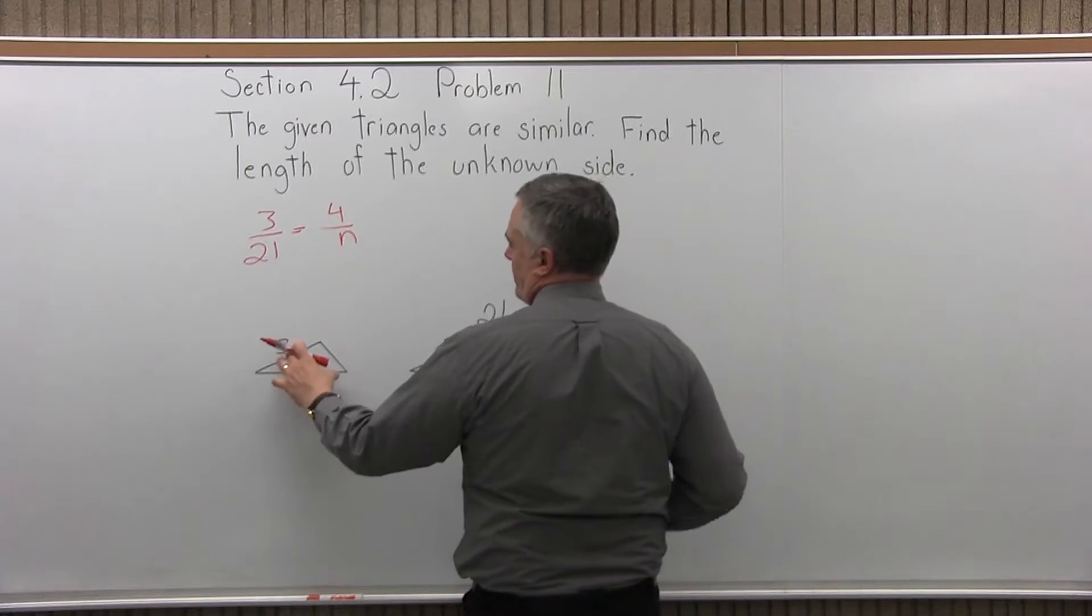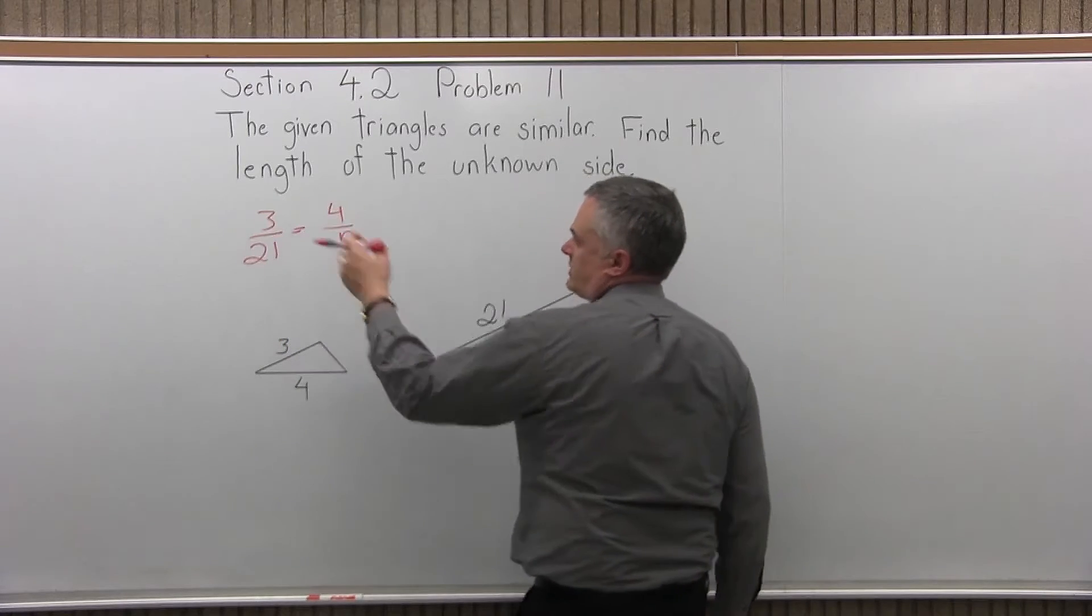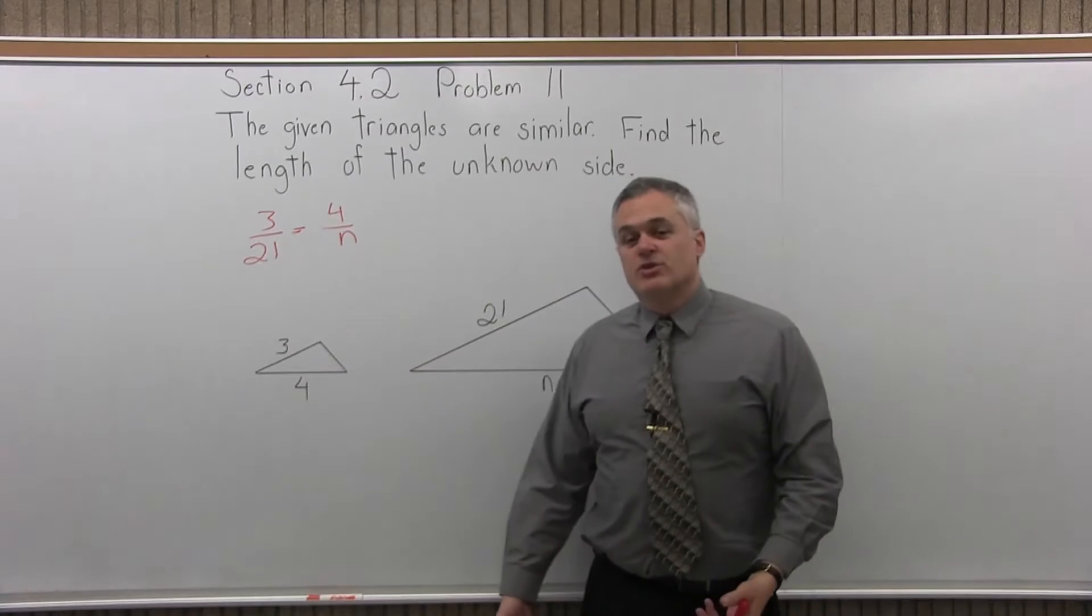And you want to keep whatever triangle you choose to be the upper part of the proportion. So the small one was my upper. That's our proportion. We have one fraction equal to another.